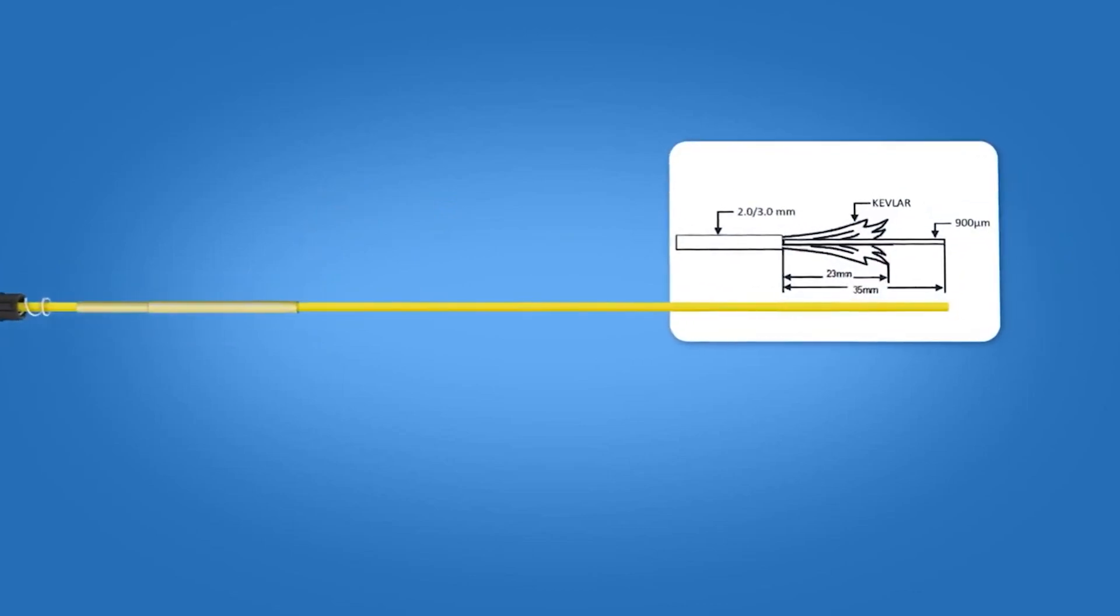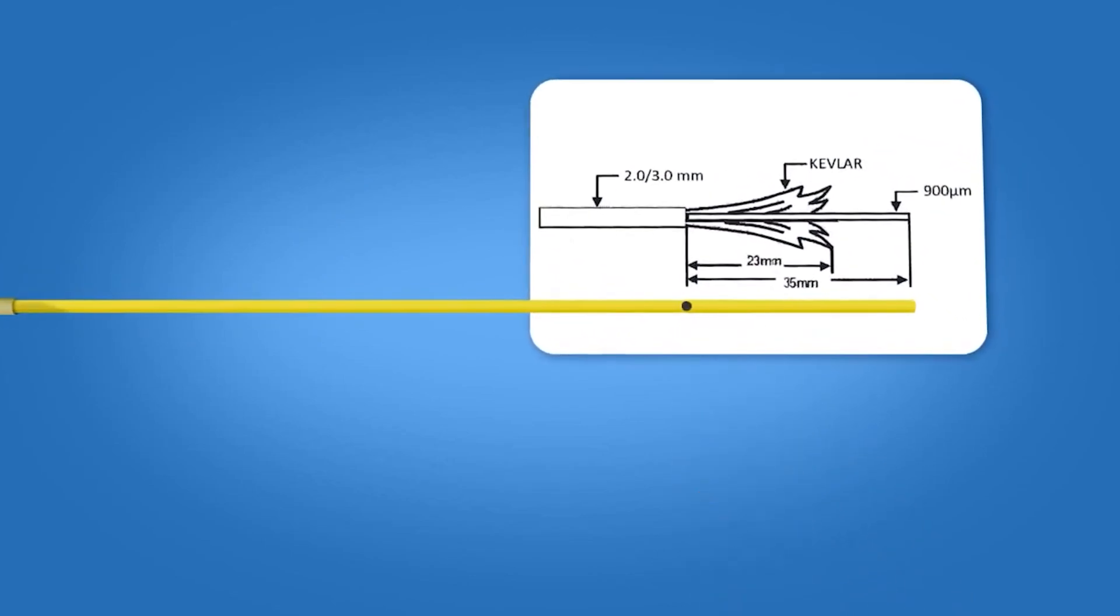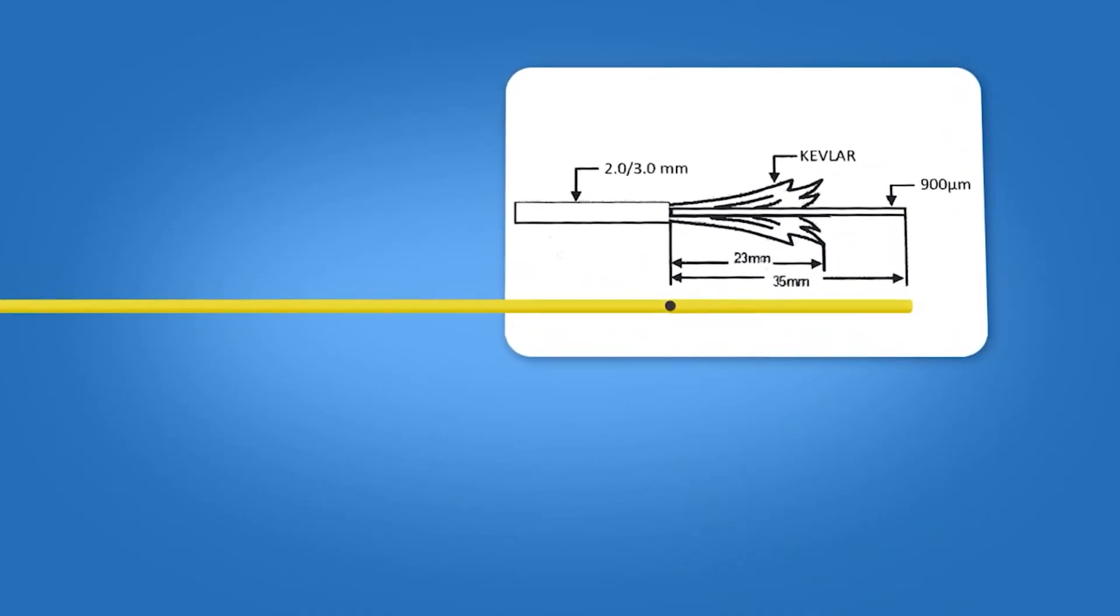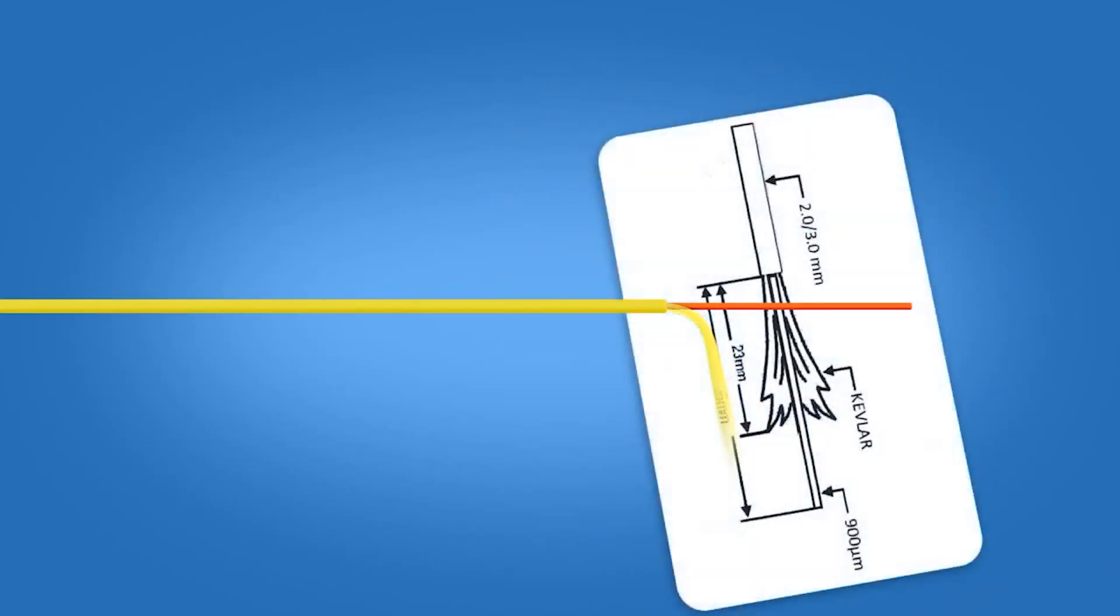Using the template on the front of the connector packaging, mark the cable at 35 mm from the end of the cable. Strip 35 mm of 3 mm jacket from the cable, exposing the Kevlar and 900 micron fiber. Cut the Kevlar to a length of precisely 23 mm.